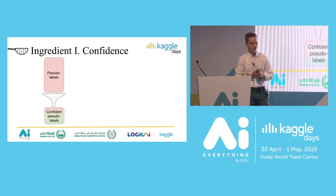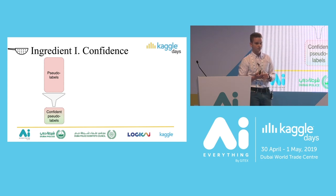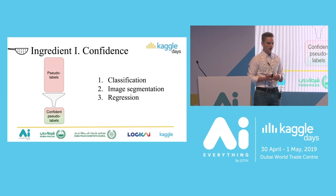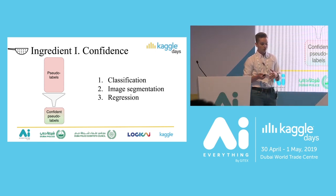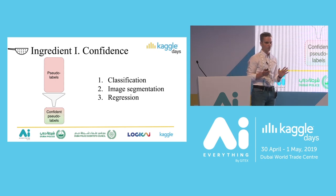Before discussing how to utilize pseudo labels, I'll talk about a couple of key ingredients. The first one is confidence. Instead of taking all predictions from the whole test set, we are interested only in confident predictions. The reason is that if we add observations that are hard to predict or represent corner cases to our pseudo labels, it can badly affect our subsequent training because it introduces noise and bias into our model. We need to choose only the confident labels.